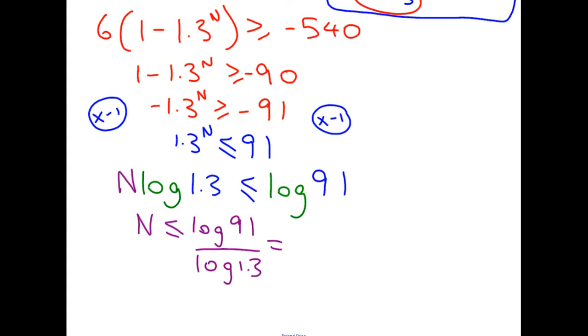If you do that on your calculator, log of 91 divided by log of 1.3, you get 17.193, etc. Now think about the context of a question. It's asking how many experiments can we do? You can't do 17.193 experiments in real life. So that means that actually, it didn't spell out explicitly, but n has to be an integer.